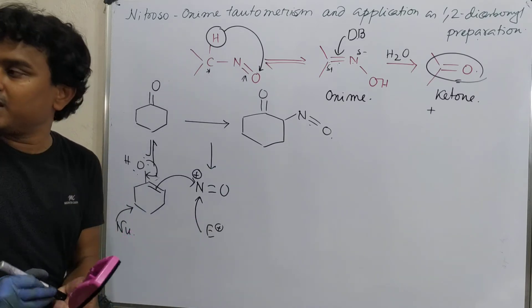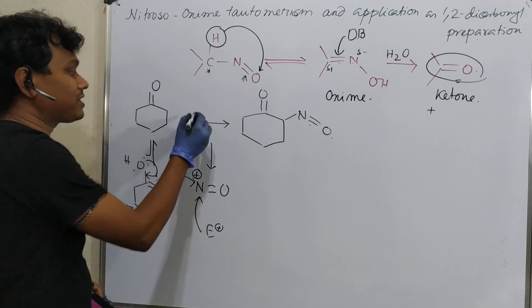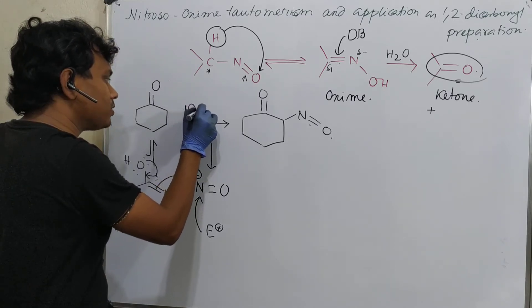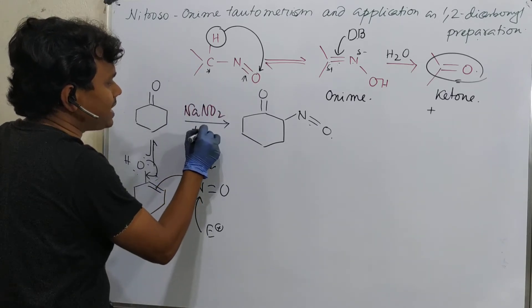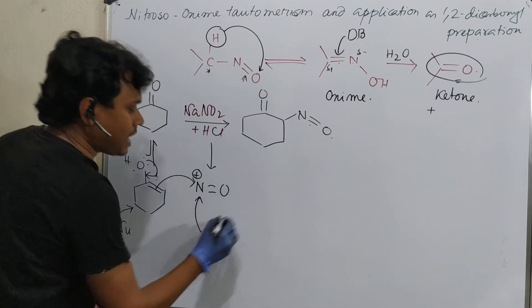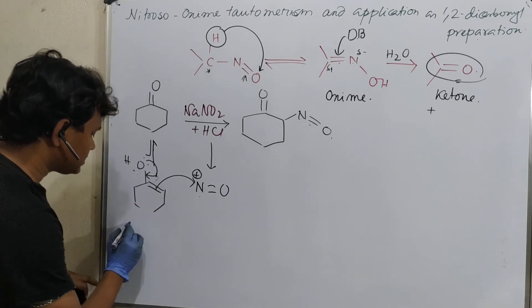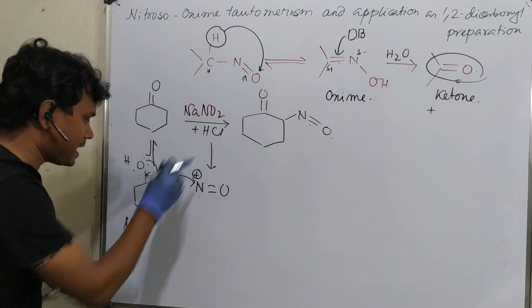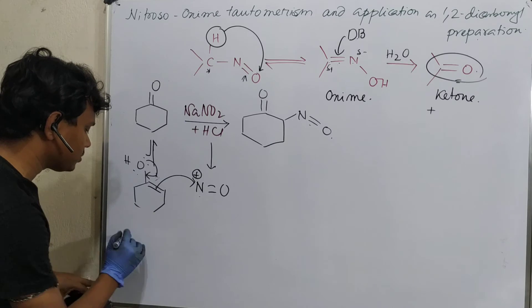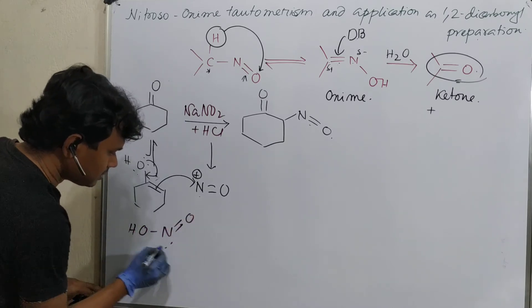That is a diazotization, means nitrosation. Diazotization is there. NaNO2 plus HCl resulted in nitroso. How? This NaNO2 and HCl resulted in HNO2. You know, HNO2 actually looks like this.